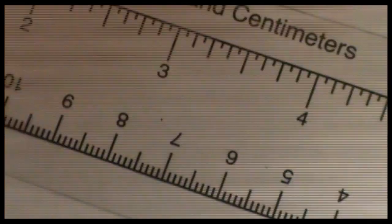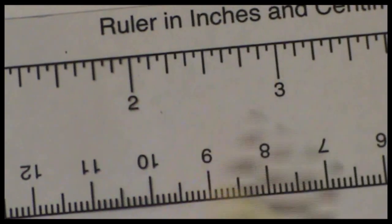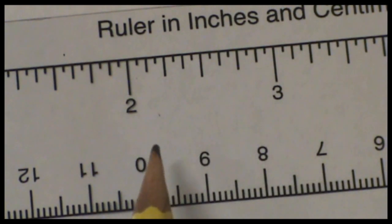We'll go back to the standard side. Some rulers will only have 8 marks between each of the numbers. That means it's base 8 and it's measuring to the 8th of an inch. This ruler is base 16. That means it's measuring to the 16th of an inch.